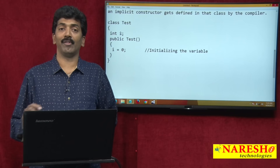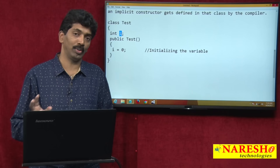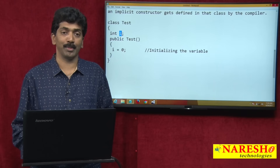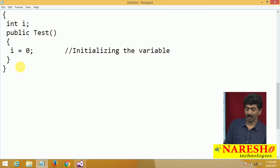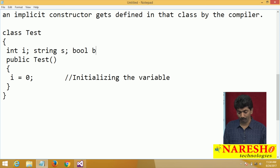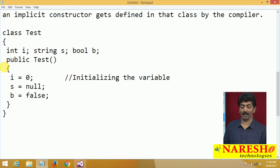All numeric types are initialized with zeros and boolean types are initialized with false. String and object types are initialized with null. So if you also declare string s and bool b without initializing, the constructor will set s = null and b = false. This initialization for each variable is the role of the constructor.